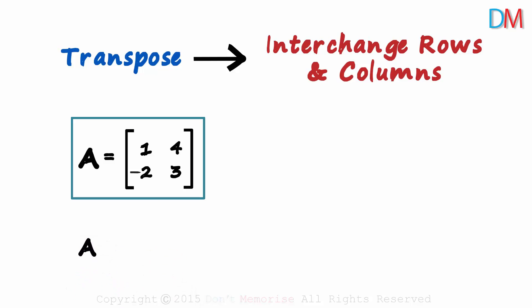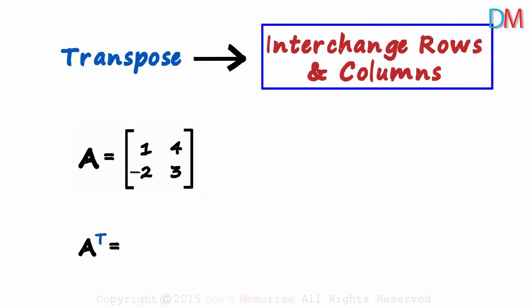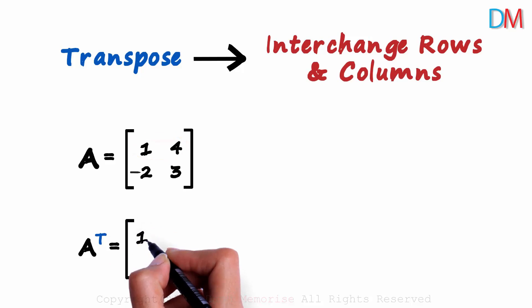It is written as A with T as a superscript. What will this be equal to? We need to interchange the rows and columns. The first row becomes the first column. The first row is 1, 4. So the first column of the transpose will be 1, 4.